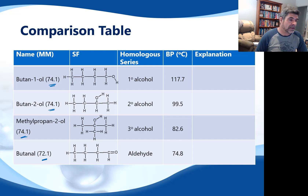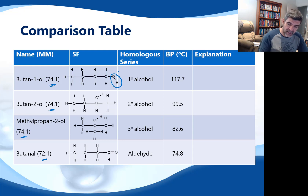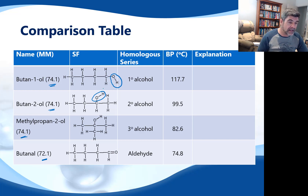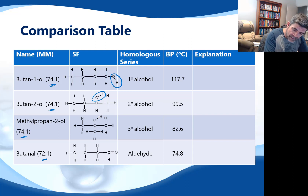Here are four compounds. Butan-1-ol is a primary alcohol — the OH group is located on an end carbon. Butan-2-ol is a secondary alcohol where the hydroxyl group comes off a middle carbon attached to two other carbons. In methylpropanol, the OH group is attached to a carbon also attached to three other carbons, making it a tertiary alcohol. All four have similar molar mass.